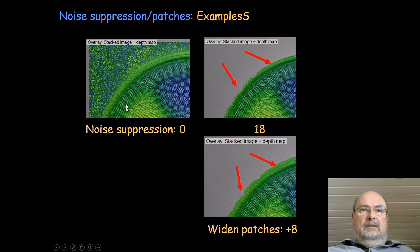This is another diatom. Noise suppression 0: noise. Noise suppression 18: it's fine here and here, but here we've lost some information about the diatom. We could make this value lower or we could widen the patches, then this will get a little bit wider. It's a compromise, and you're actually able to combine the results, the maps, and the stacked images finally to get the perfect result at the end.